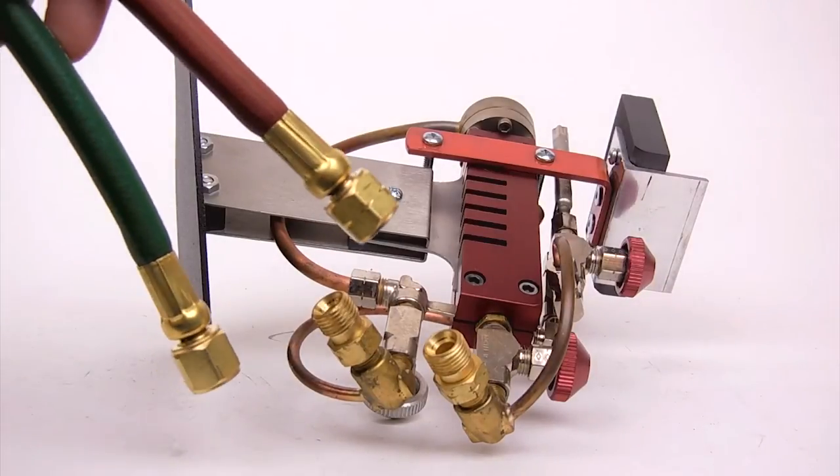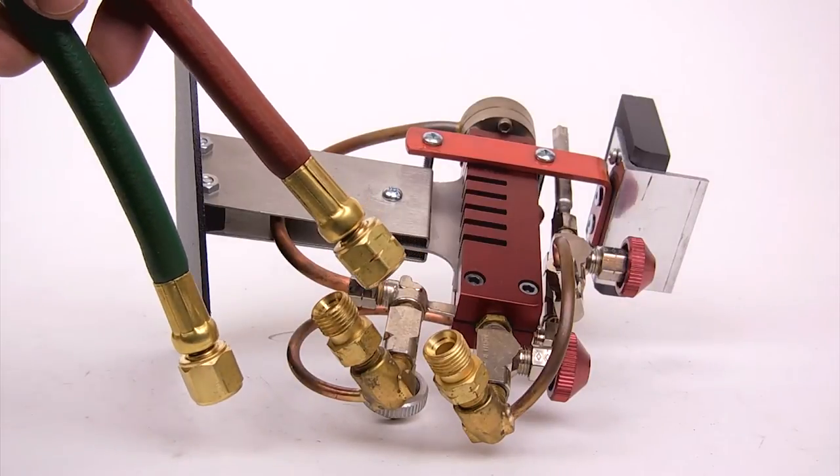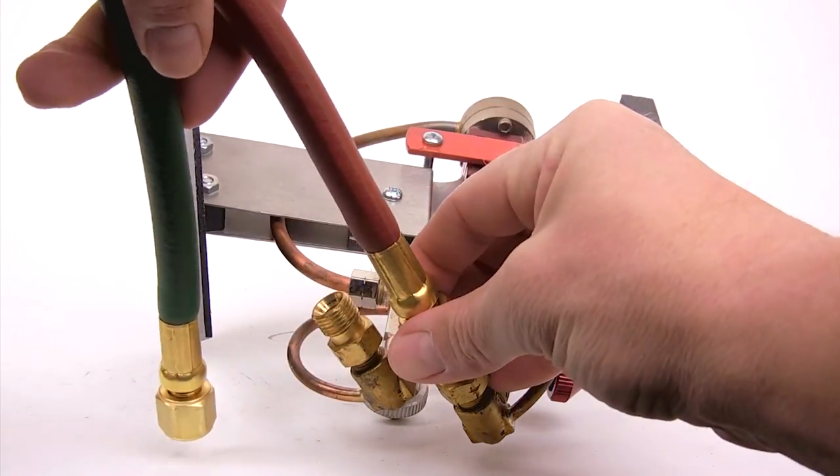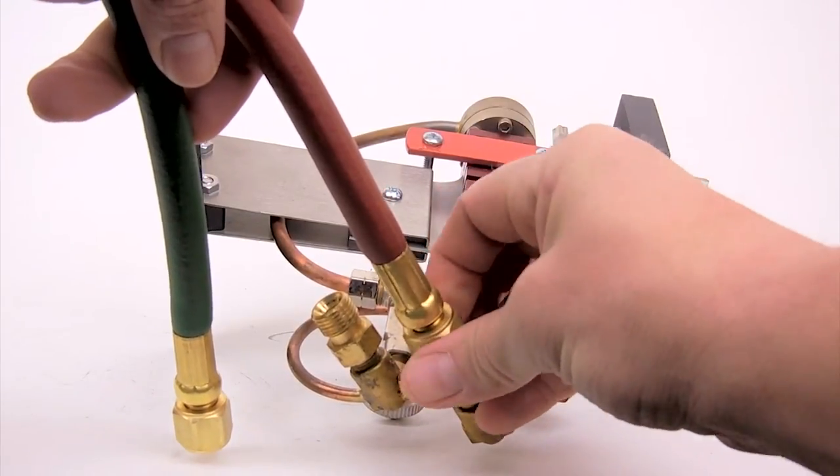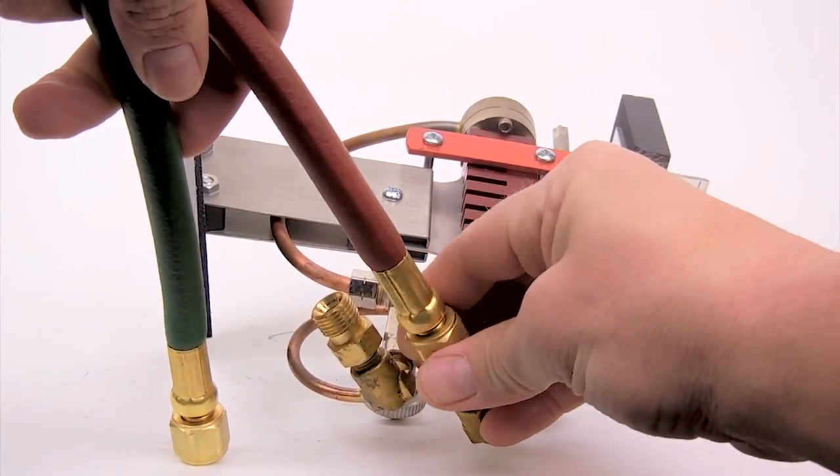We will install the propane fitting first. The notch indicates that this particular fitting is a left-hand thread, which is the opposite from the oxygen fittings clockwise thread direction.